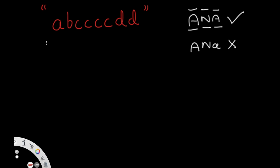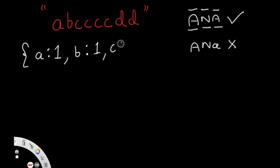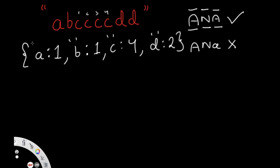Now let's see how we can find the length of the longest palindrome given a string. What we're going to do is count the frequency of each letter inside a dictionary. So we have: A with a frequency of one, B with a frequency of one, C with a frequency of four, and D with a frequency of two.